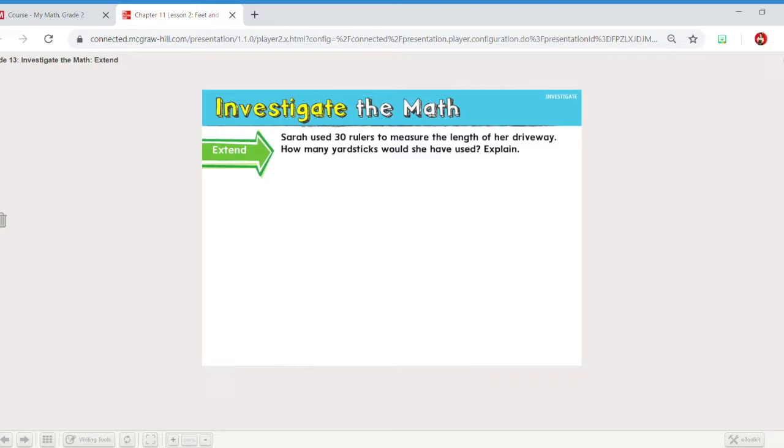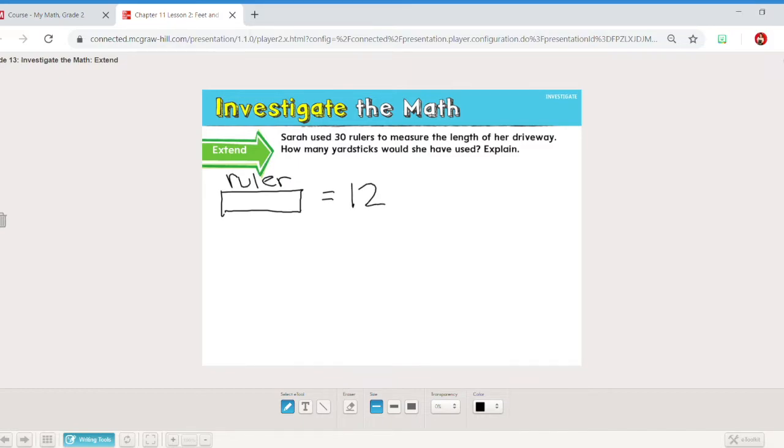Sarah used 30 rulers to measure the length of her driveway. How many yardsticks would she have used? Oh boy. So this is what's called conversion. A ruler, I'm going to draw a ruler here. One ruler equals 12 inches. That's how many inches are on a ruler. Now 12 inches is the same as one foot. These are the abbreviations for that. She needs to measure in yards. So we're going to move over to this. We know that three feet equals one yard. So we would need three rulers to make one yard.